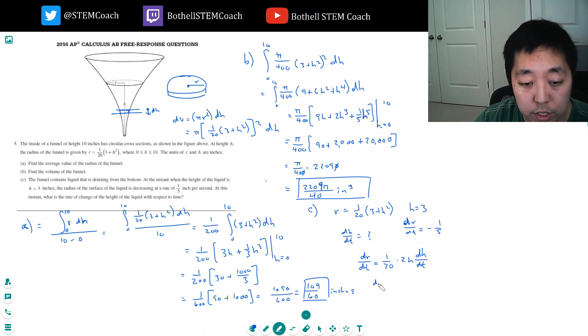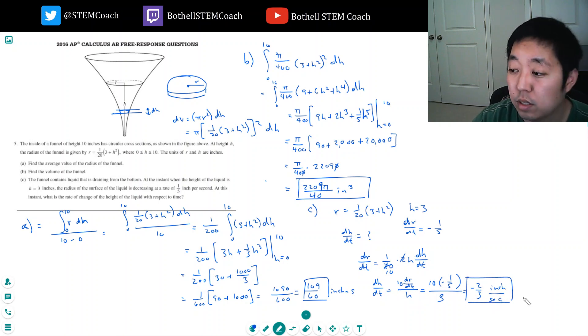Okay. So I solve for dh/dt and I get, let's see, this cancels that to make that 10. So it's 10 dr/dt over h. And now I know what each of these are. 10 times minus 1/5 over 3, because I know dr/dt is negative 1/5, I know at h equals 3. So that's negative 2/3 and it would be inches per second. Okay.